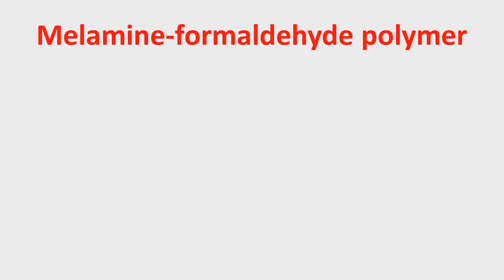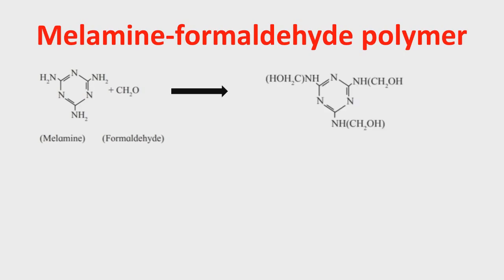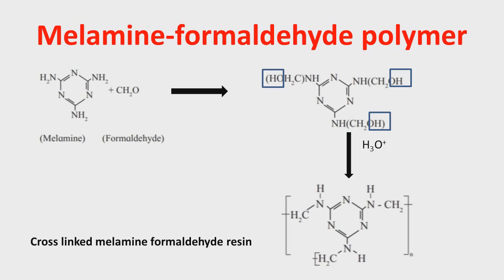Another polymer is melamine-formaldehyde polymer, whose monomers are melamine and formaldehyde. When combined, they form an intermediate called a resin intermediate. On polymerization, OH groups are removed in the form of water, forming a crosslinked melamine-formaldehyde resin. This polymer is a good resistant to heat and moisture, and is also a thermosetting plastic. It is used in making decorative table tops and plastic dinnerware.